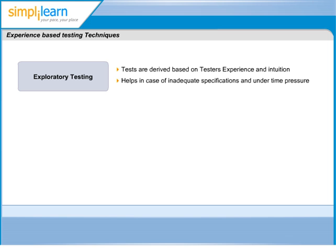This is an approach that is most useful when there are no or poor specifications and when time is severely limited. It can also serve to complement other, more formal testing, helping to establish greater confidence in the software. In this way, exploratory testing can be used as a check on the formal test processes by helping to ensure that the most serious defects have been found.